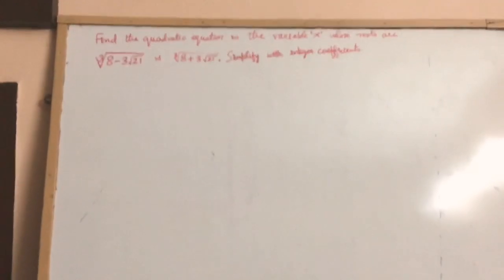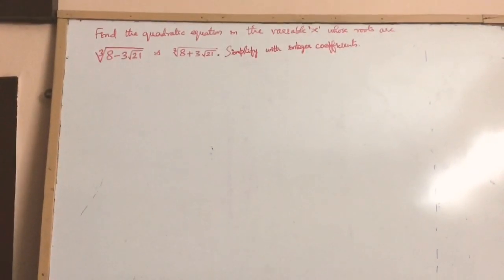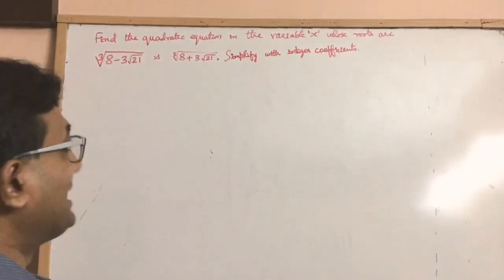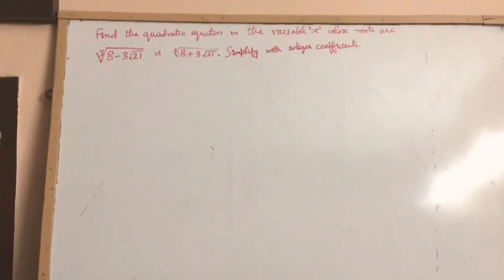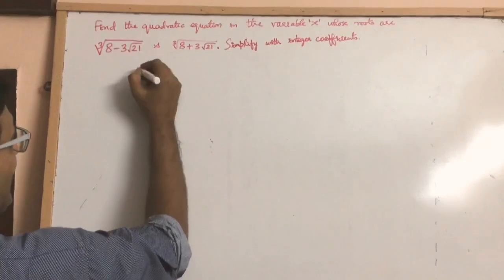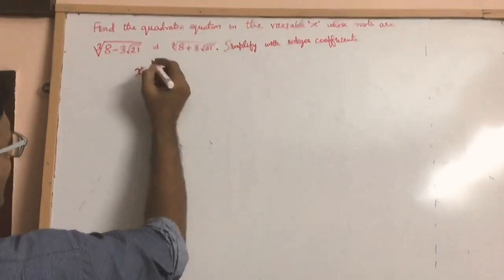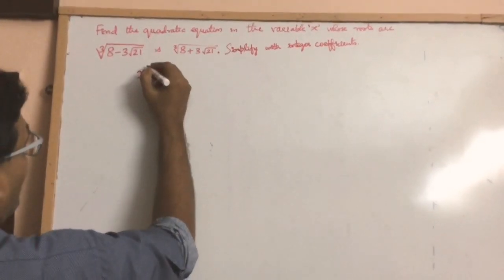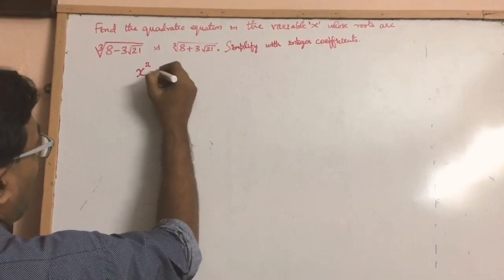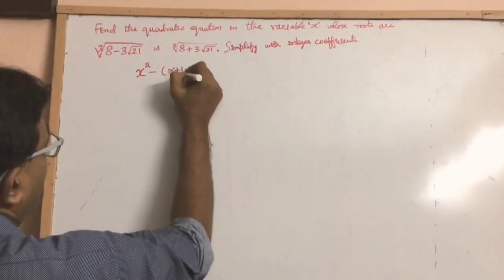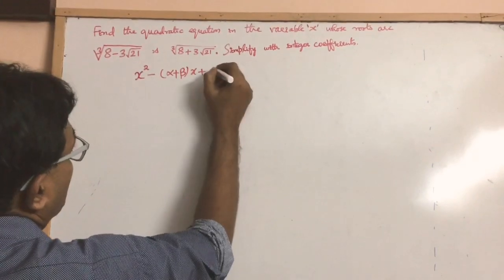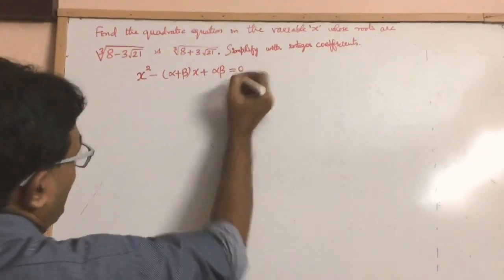If you are given the roots of a quadratic equation, say alpha and beta, we know that the equation can be written as x squared minus (alpha plus beta) times x plus alpha times beta, equal to 0.